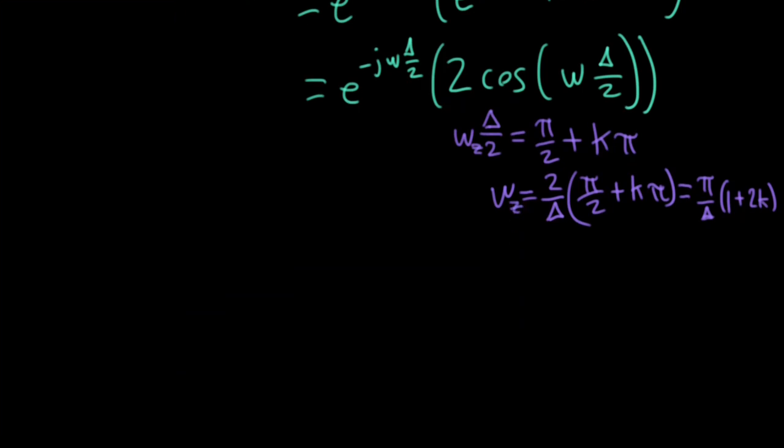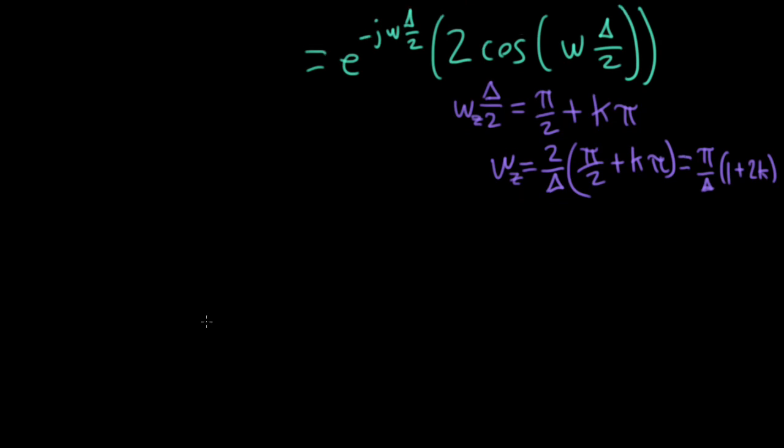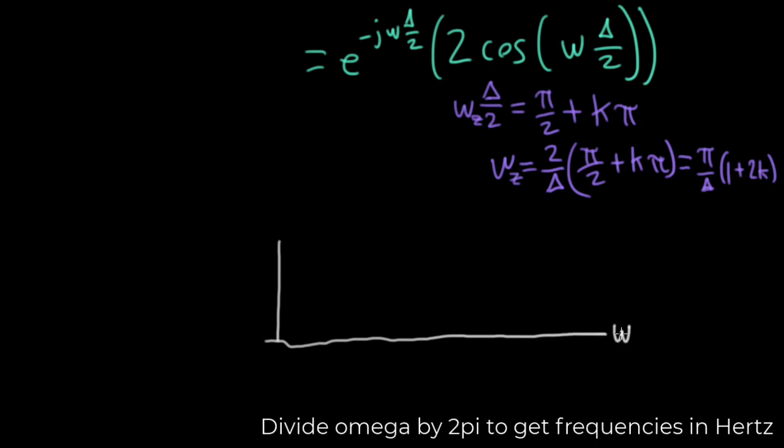Okay, so with that in mind, let's now actually draw a frequency response plot. So I'll plot magnitude on the vertical axis and frequency on the horizontal axis. And the omega here is radians per second.